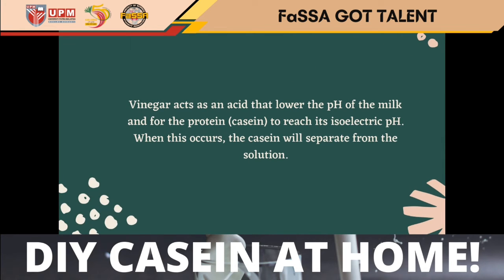Vinegar acts as an acid that lowers the pH of the milk, causing the protein casein to reach its isoelectric pH. When this occurs, the casein will separate from the solution.